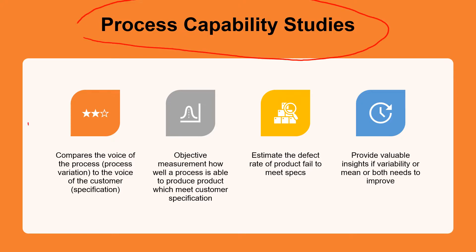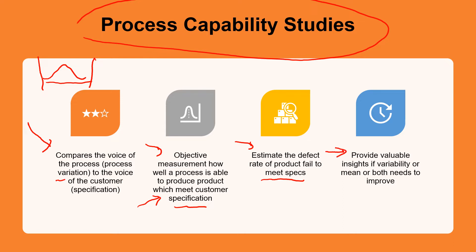Process capability study is used to compare the voice of the process — or process variations, as every process has its own variations — with the voice of the customer, which is the specification limits. It is an objective measurement of how well the process is able to produce products or parts that meet customer specifications, and it is able to estimate the defect rate of products which fail to meet specs, and provides valuable insights on whether variability, the mean, or both are problems preventing us from meeting specs and therefore needing improvement.